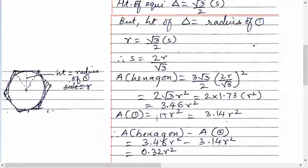Now area of circle is what? Pi r square. That is pi r square, 3.14 times r square.